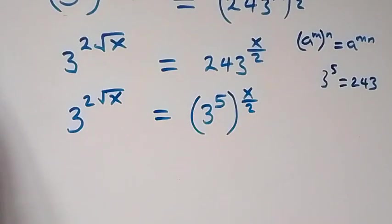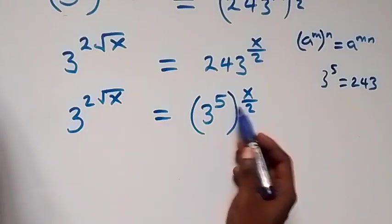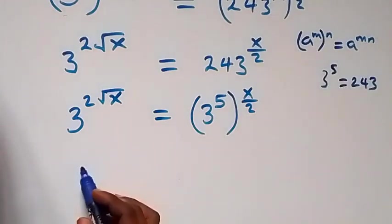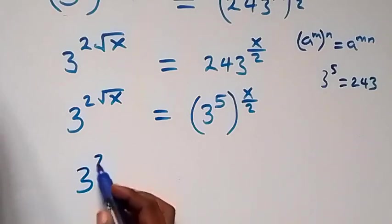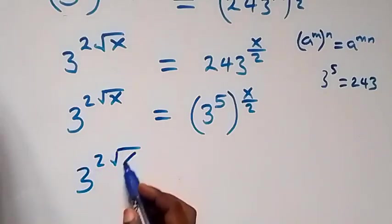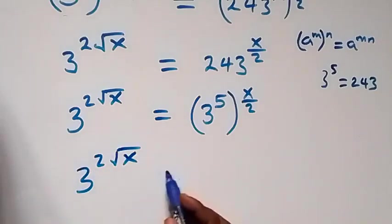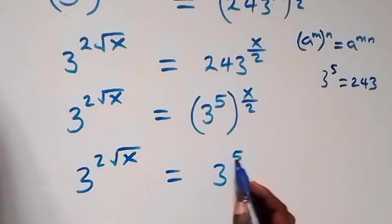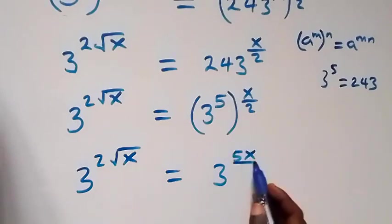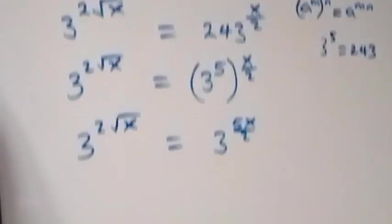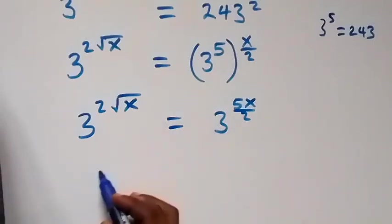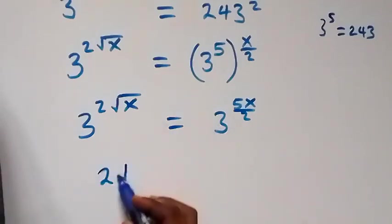Applying the law of indices again, this power multiplies, giving us 3 raised to power 2 root x equals 3 raised to power 5x over 2. Since the bases are the same, we can equate the exponents, giving us 2 root x equals 5x over 2.